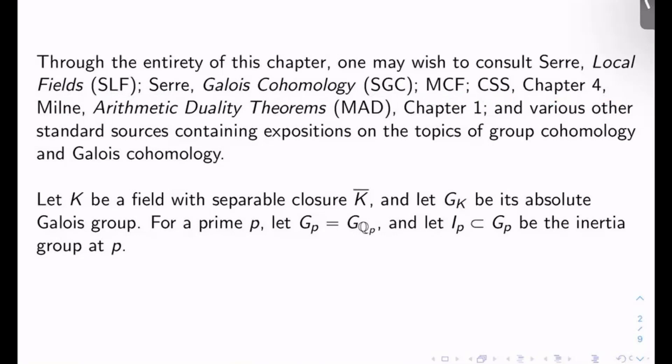CSS Chapter 4 is the main driver behind these notes. That's Cornell, Silverman, Stevens, and Milne's arithmetic duality theorems, which I'll call MAD, especially Chapter 1. And then various other standard sources containing expositions on the topics of group cohomology and Galois cohomology. There's all kinds of survey papers out there, and Conrad probably has some stuff.